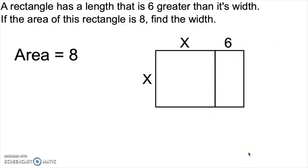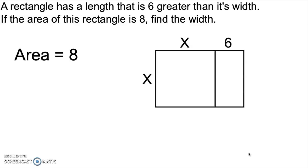I have not changed the area of the shape at all. All I've done is go from the original rectangle to a rectangle that is formed of a square and a smaller rectangle attached. The area is still 8. Now I'm going to split the small rectangle on the side into two pieces. I have not changed the area of the entire figure. It is still 8.